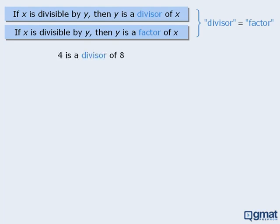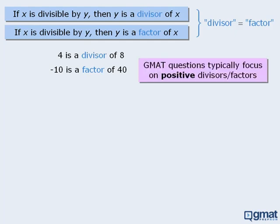We can say that 4 is a divisor of 8, or that negative 10 is a factor of 40. Although negative 10 is indeed a factor of 40, you will find that GMAT questions typically focus on positive divisors. To continue, 15 is not a divisor of 20.